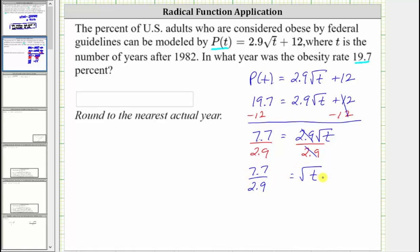Now that we've isolated the square root, to undo the square root we now square both sides of the equation. On the right side, squaring undoes the square root, and the right side simplifies to just t.